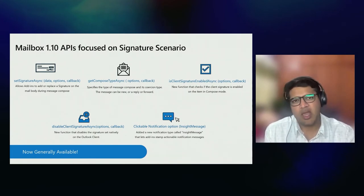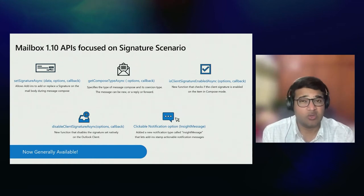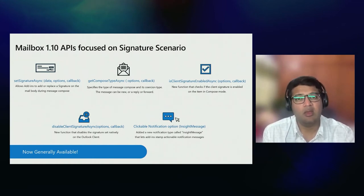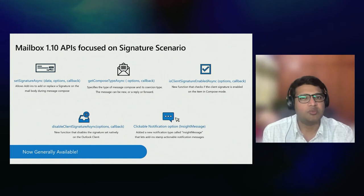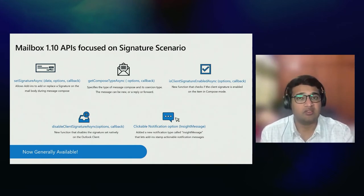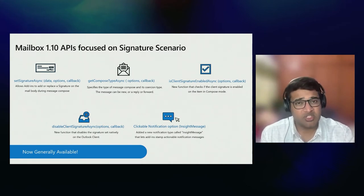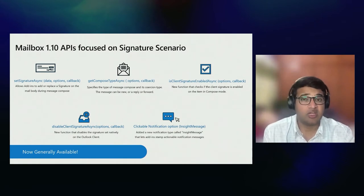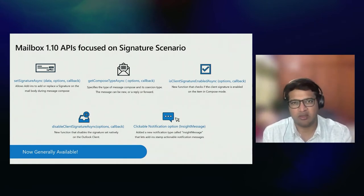Lastly, we've made some changes to the notification message API — we now give you an option to have a call-to-action button with notification messages. The user can click on the notification message to open the task pane and achieve enhanced scenarios where applicable. This API is also really useful if you want to have some UI element associated with event-based add-ins.